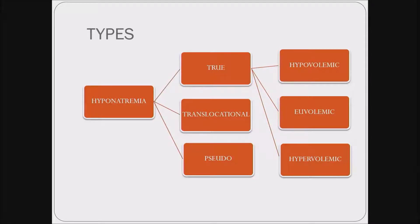There is something called true hyponatremia and also pseudo-hyponatremia. In pseudo-hyponatremia, the actual reduction in sodium concentration is not because of loss of sodium — it is because of the presence of some other particle in the blood, like triglycerides most commonly or plasma proteins. In translocational hyponatremia, osmotically active ingredients like mannitol or glucose are present. We need to be aware of this because if a patient is referred with low sodium, don't jump straight to sodium replacement. Here it is not due to actual loss of sodium; you need to correct the triglyceridemia or protein levels and then sodium corrects itself.